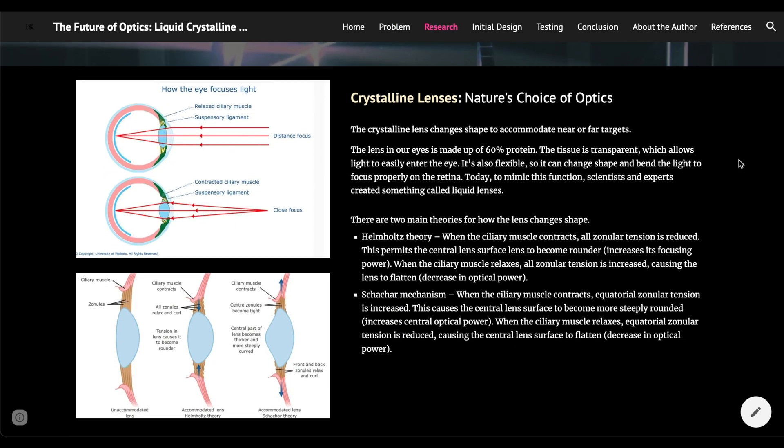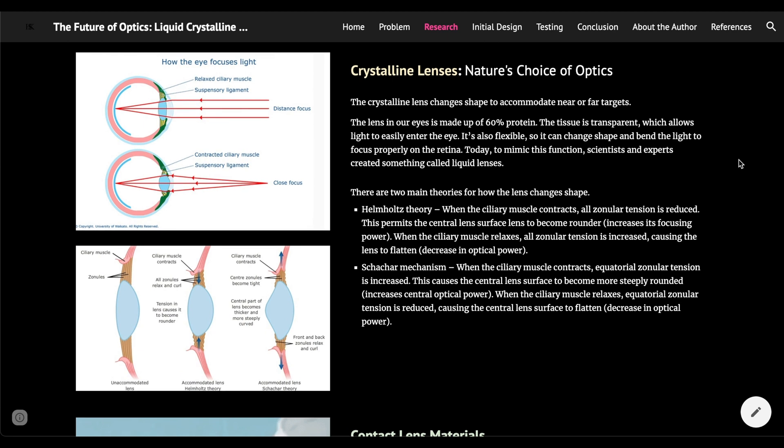Moving on to the research. Talking more about what nature has chosen for us, crystalline lenses. Crystalline lenses change shape to accommodate near or far targets. The lens in our eyes is made up of 60% protein. The tissue is transparent, which allows light to easily enter the eye. It's also very flexible, so it can change shape and bend the light to focus properly on the retina.